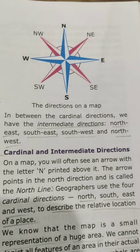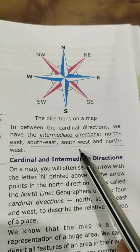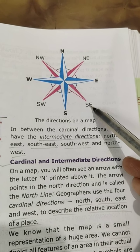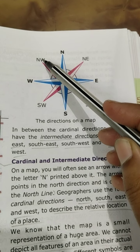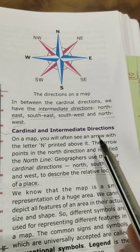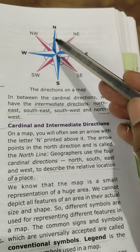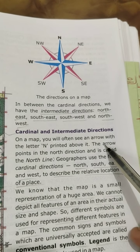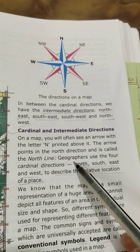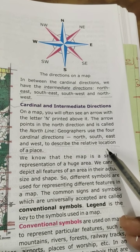In between the cardinal directions, we have the intermediate directions: northeast, southeast, southwest, and northwest. On a map, you will often see an arrow with the letter N printed above it — this arrow points in the north direction and is called the north line. Geographers use the four cardinal directions — north, south, east, and west — to describe the relative location of a place.